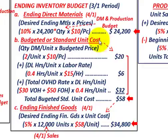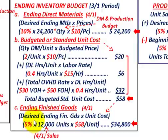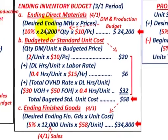So there are three things to determine: the ending direct materials at $24,200, the standard unit cost at $58 per unit, and the ending finished goods — 5% of next period's projected sales times the unit cost — giving us $34,800.